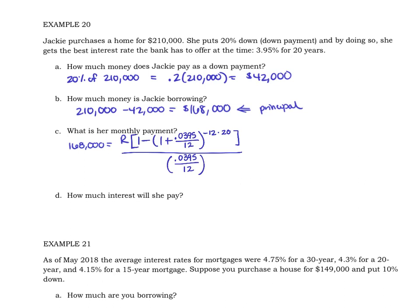We've got to figure out what this quantity being multiplied by r happens to be. When I put that into my calculator — and you can check your progress — I'm getting 165.741 and some additional decimal places. Then dividing both sides of the equation by that number, I get that the regular monthly payment is $1,013.63. That's how much Jackie will be paying every month for her house.